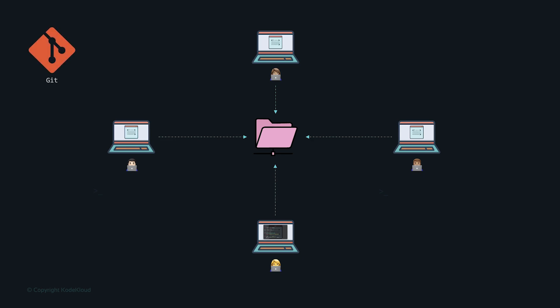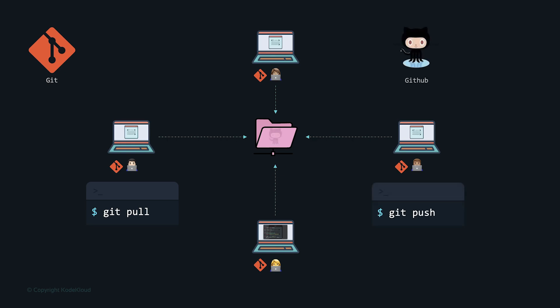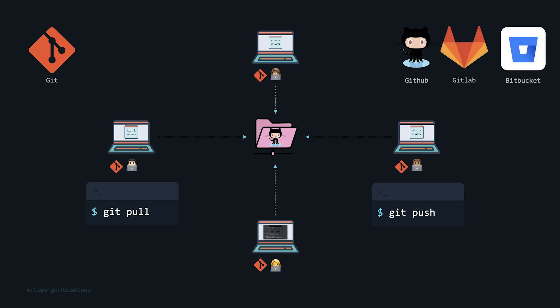Git helps all developers work on the same application at the same time and collaborate efficiently. Everyone installs and configures Git, pulls the latest code using `git pull`, adds their own changes, and pushes back using `git push`. The central hub is a cloud-based platform — GitHub, for example — where you configure projects, organizations, users, and define different access levels for different users.